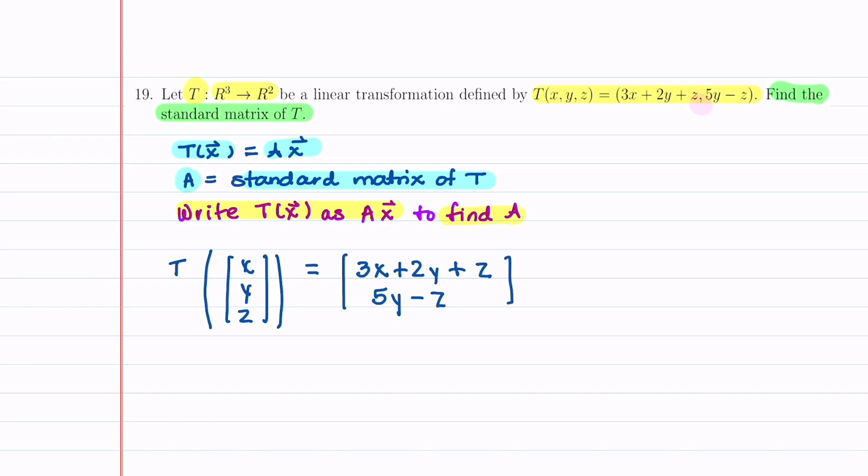Before we go ahead and break this down into a matrix times a vector, let's go ahead and rewrite this as 3X plus 2Y plus Z. And then because we have no X's in our second component, I'm going to write this as 0X plus 5Y minus Z.